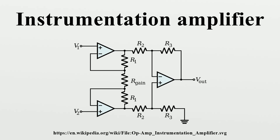Although the instrumentation amplifier is usually shown schematically identical to a standard operational amplifier, the electronic instrumentation amp is almost always internally composed of three op-amps. These are arranged so that there is one op-amp to buffer each input, and one to produce the desired output with adequate impedance matching for the function.